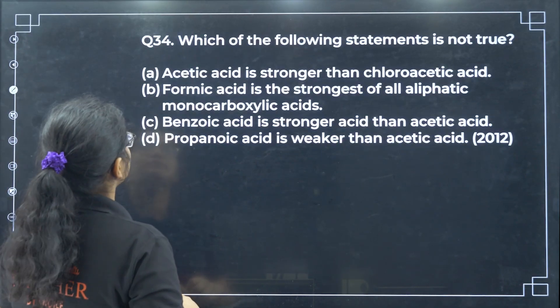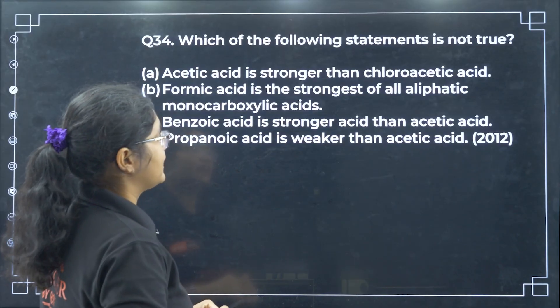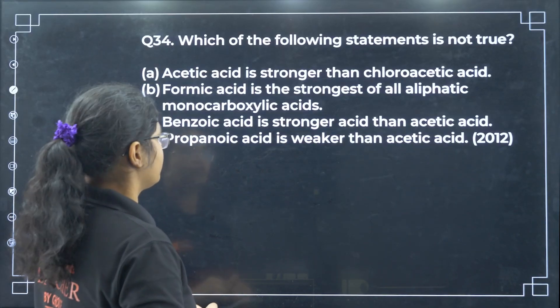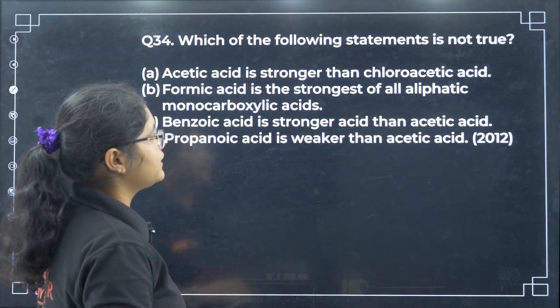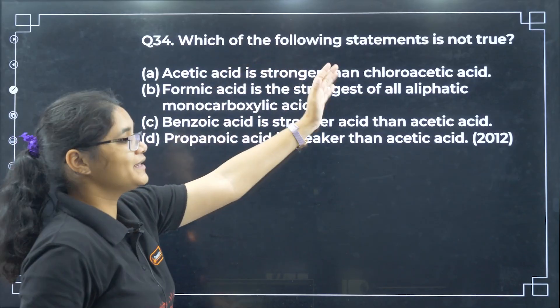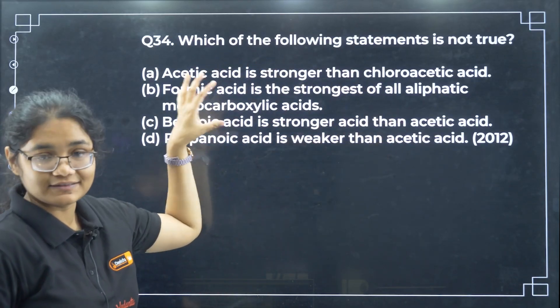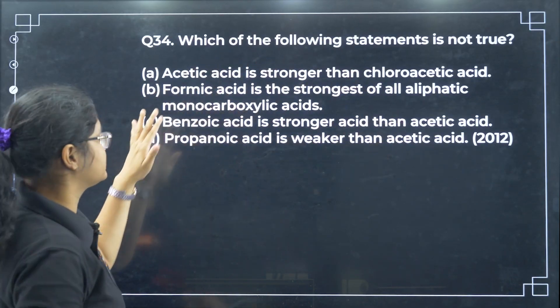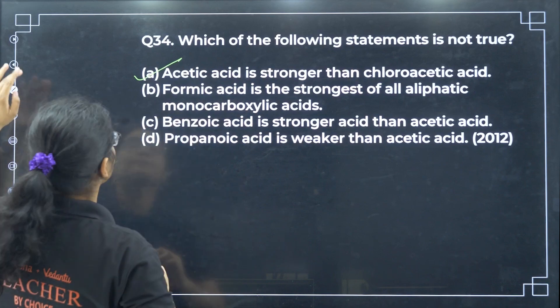Question 34 — which of the following statements is not true? The statement that acetic acid is stronger than chloroacetic acid is not true, because chloroacetic acid is actually stronger than acetic acid due to the electron withdrawing chlorine group. So option A is the answer.